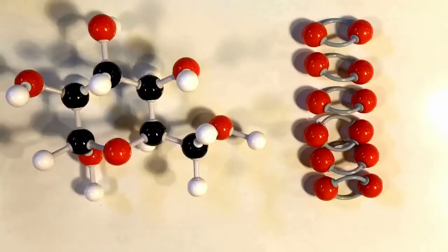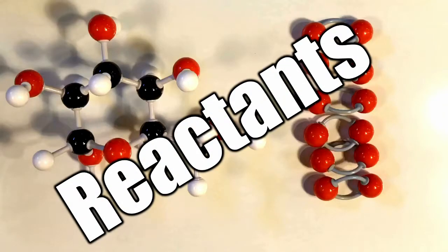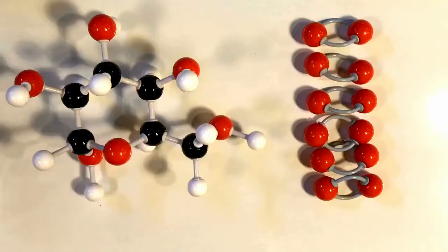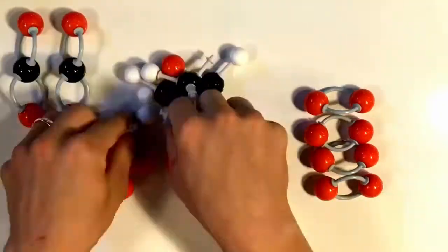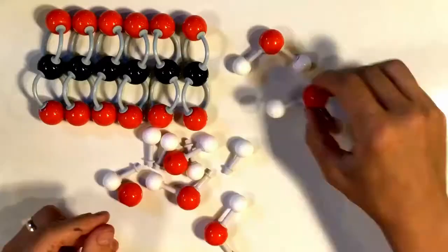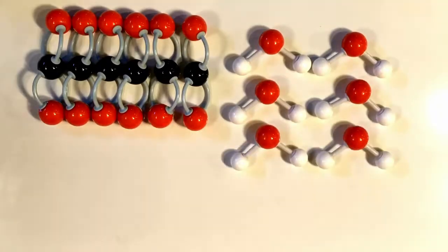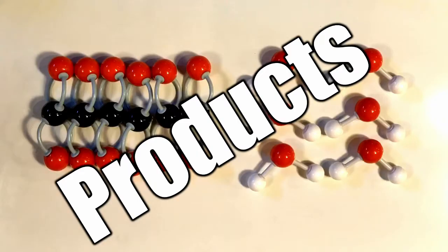And there's actually another way that we can prove that we balanced this reaction correctly. If we take all the molecules of our reactants, we should be able to rearrange them to create the products. So when we rearrange all the atoms, we can see that we create all of our products, which means that we must have balanced out our reaction properly.